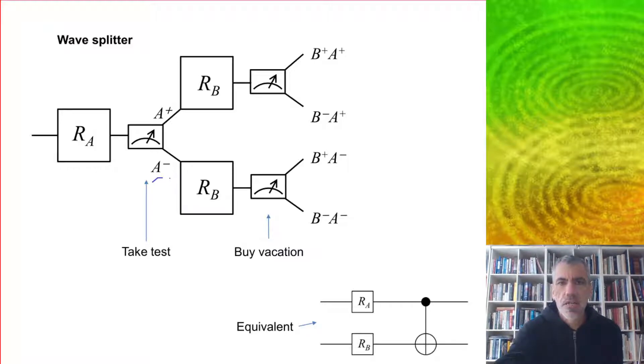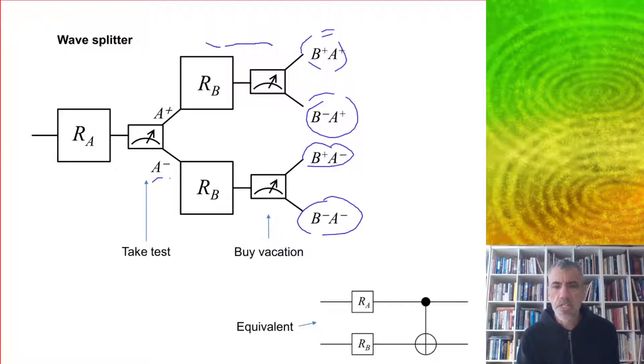We take the test. We can either pass A plus or we can fail A minus. If we pass, we go through this route up at the top, so we have this decision to buy a vacation. It can either split to B plus A plus or B minus A plus. And then we have another two outcomes here for the case where we failed the test, and we can get the probabilities for all this.